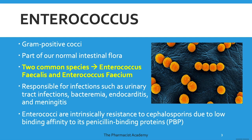There are two main species of the enterococcus family: Enterococcus faecalis and Enterococcus faecium, and they're responsible for different types of infections. The reason why cephalosporins are not active against enterococcus is simply because when they bind to that penicillin binding protein or transpeptidase, the binding is very weak. The beta-lactam is unable to really do what it's meant to do — it's due to low binding affinity to the penicillin binding protein.